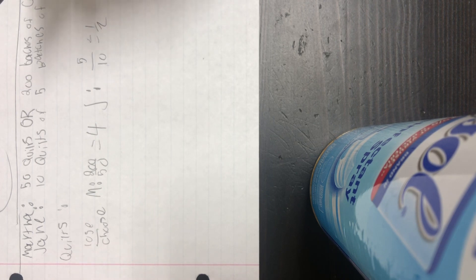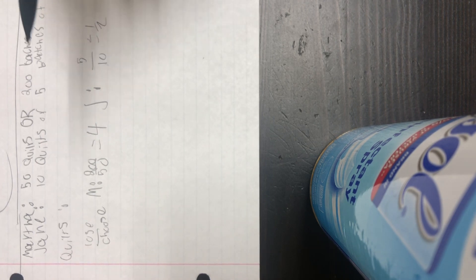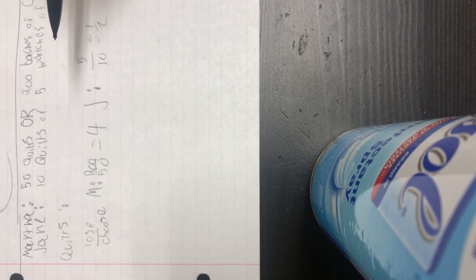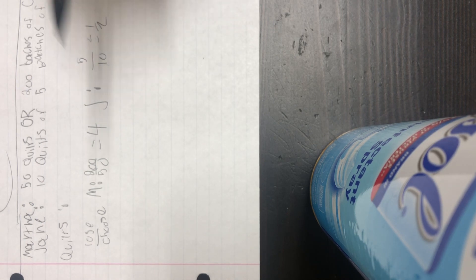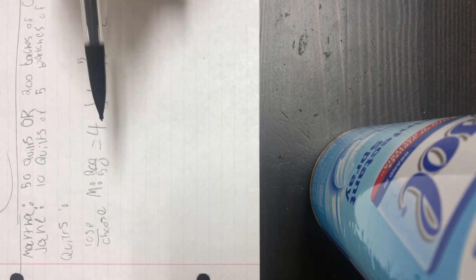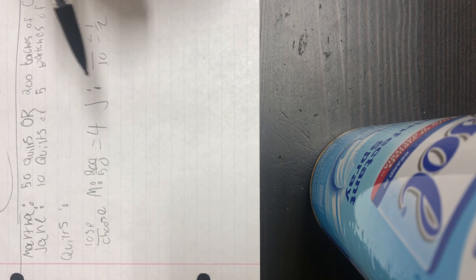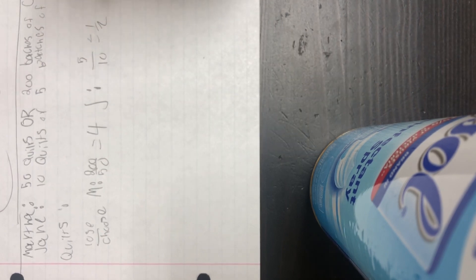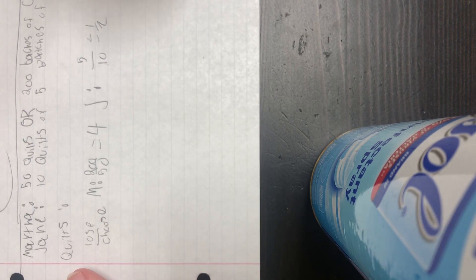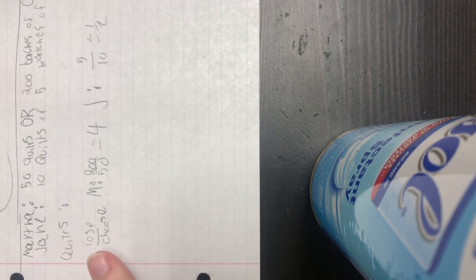You cannot have a comparative advantage in both goods, so if Jane has the comparative advantage in quilts, Martha has the comparative advantage in chocolate chip cookies. The answer is D: Jane has the comparative advantage in quilts and Martha has the comparative advantage in chocolate chip cookies.